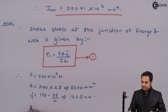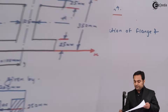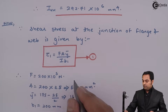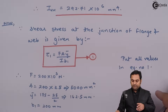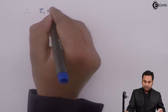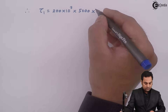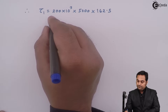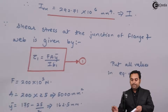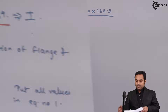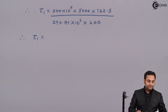b₁ is the width at the junction, which is 200 mm. Putting all values into the equation: τ₁ = (200 × 10³ × 5000 × 162.5) / (292.71 × 10⁶ × 200). On calculating this, I get τ₁ = 2.77 N/mm².